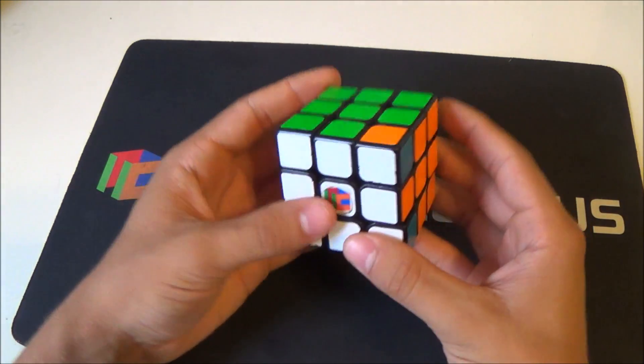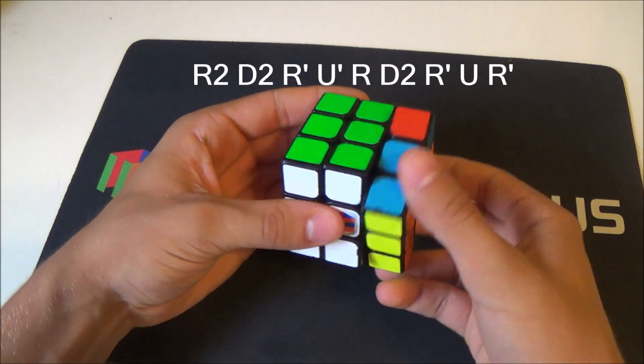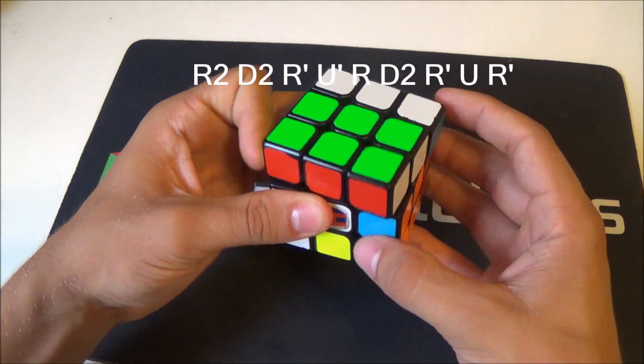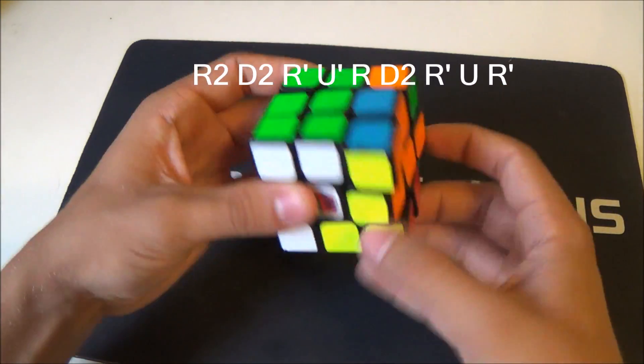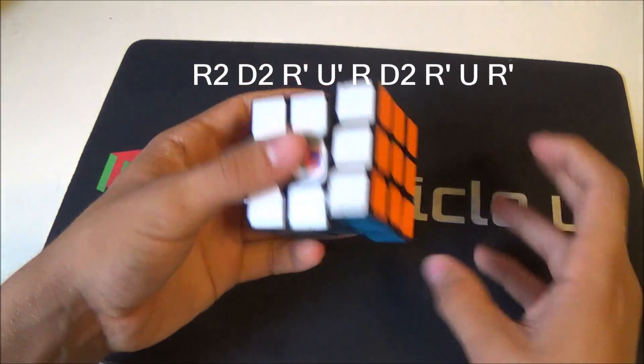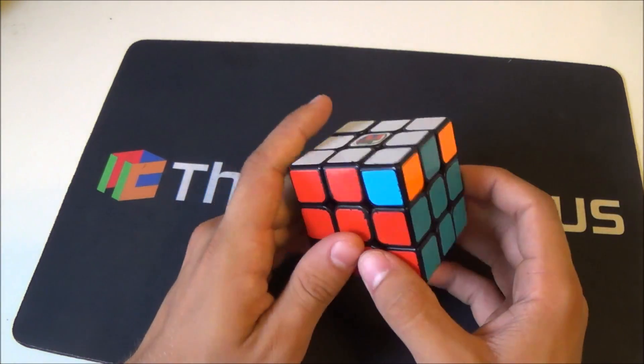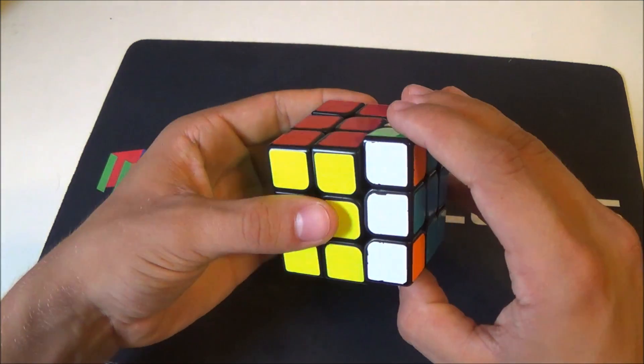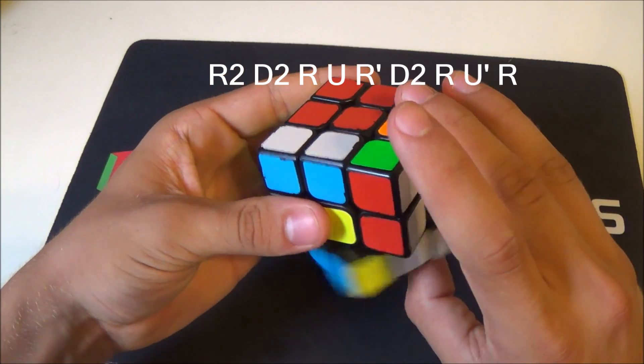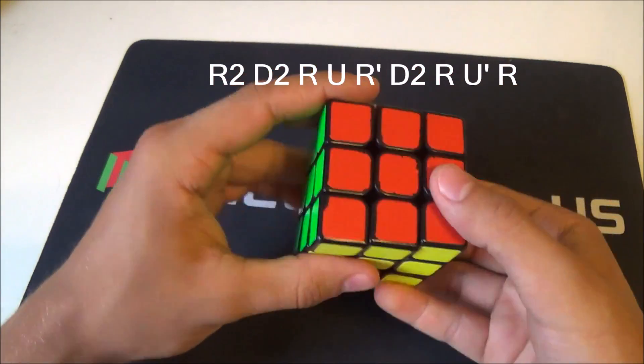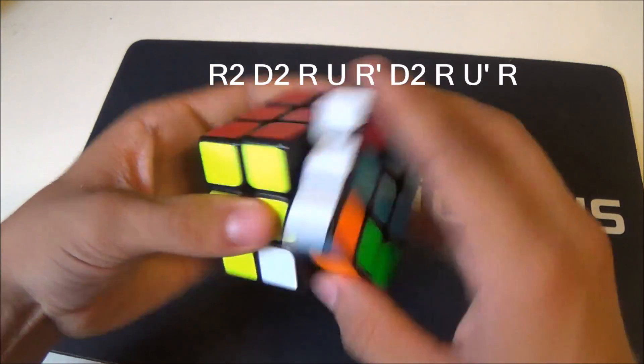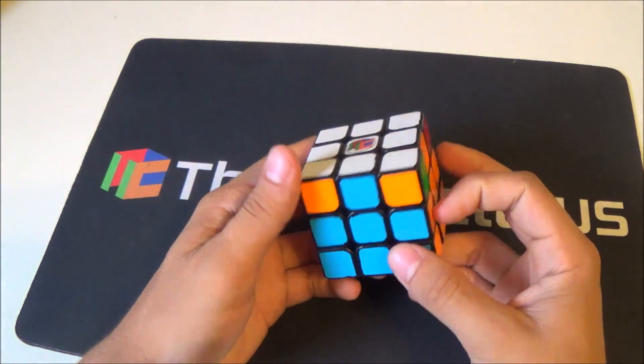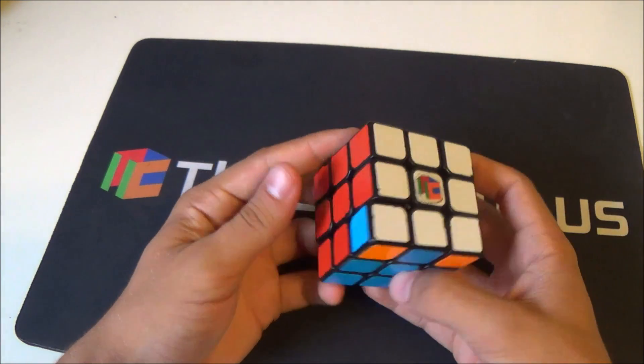You can also execute it from this angle, like holding it up like this. I'm not good at it. Now the AB-perm from here. So what you do is just the inverse of the other one. And once again, you can also do it from this angle.